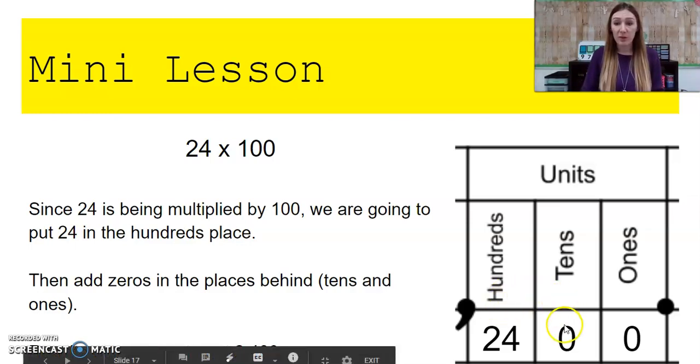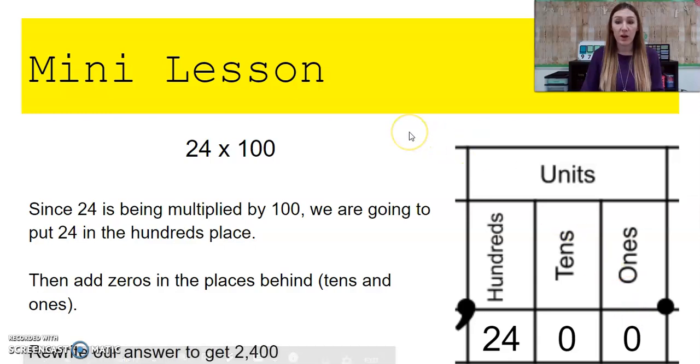Then we'll add zeros in the places behind. So the tens place needs a zero, and the ones place needs a zero. Then we'll rewrite our answer to get 2,400.